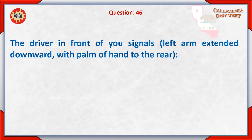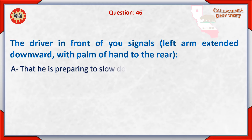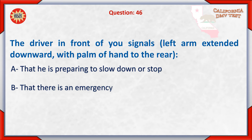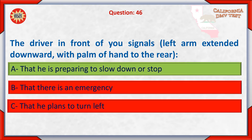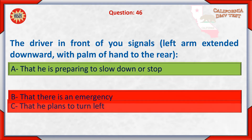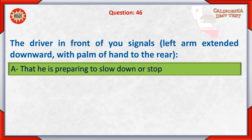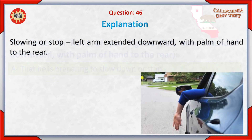Question 46. The driver in front of you signals with left arm extended downward, with palm of hand to the rear. This means: A. That he is preparing to slow down or stop. B. That there is an emergency. C. That he plans to turn left. The correct answer is A — slowing or stopping: left arm extended downward with palm of hand to the rear.